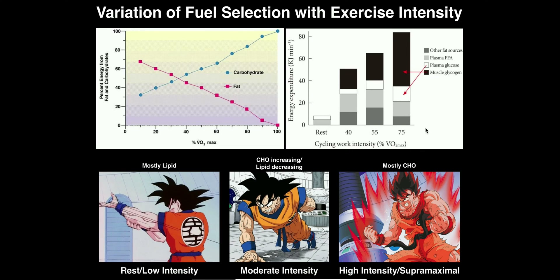If we were to extend this up to 100% of VO2 max, the bar would be up somewhere by the title. But now what we want to talk about is the relative energy expenditure, or the percent contribution of each of these fuel sources to exercise at a given intensity. We have mainly four sources: muscle glycogen in black, plasma glucose in white, plasma free fatty acids in light gray, and other fat sources in darker gray. Notice at rest it's about a 50-50 split — some contribution from plasma glucose and plasma free fatty acids, but really no contribution from muscle glycogen or the other fat sources.